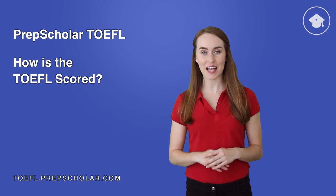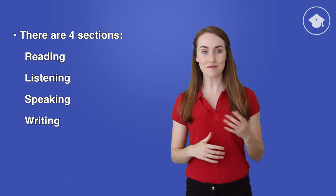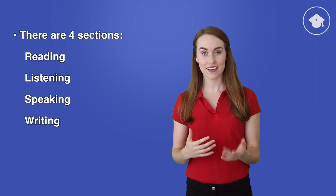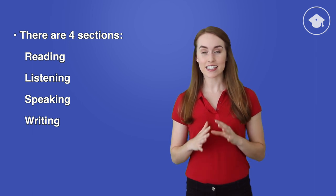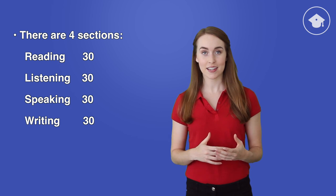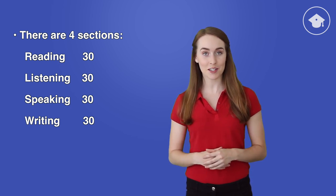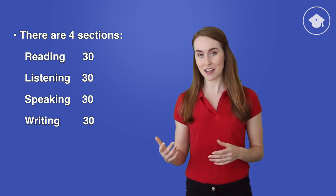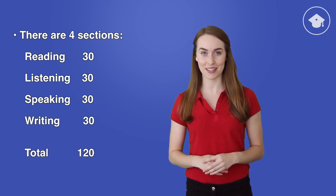The TOEFL has four sections: reading, listening, speaking, and writing. On each section, you can get a maximum of 30 points. So a perfect score on the TOEFL, 30 points on every section, is 120 points.